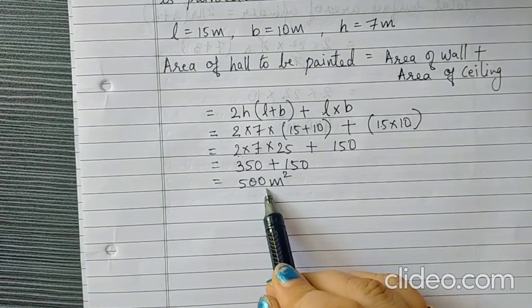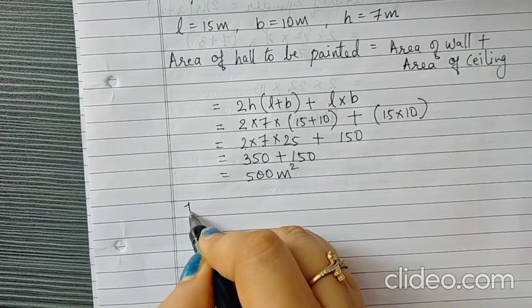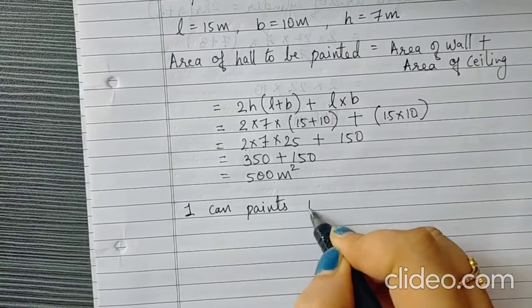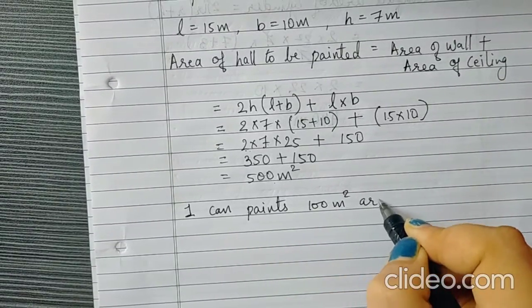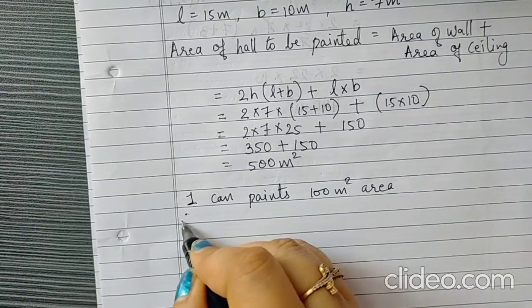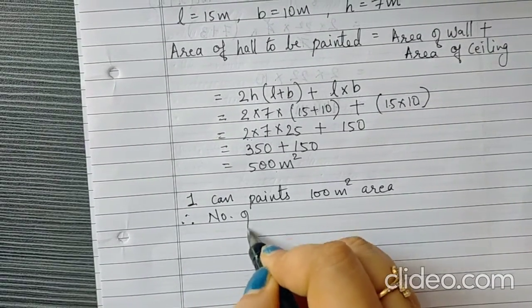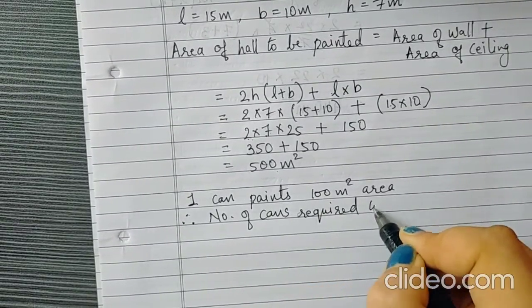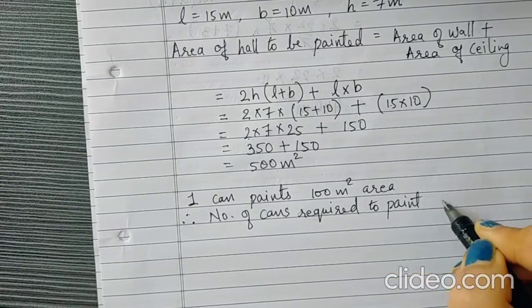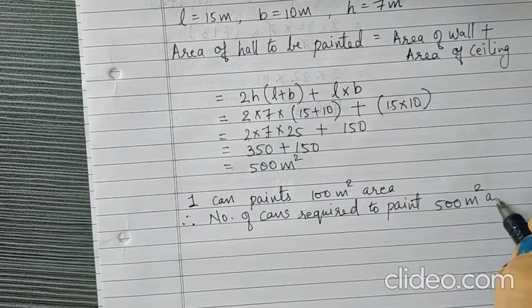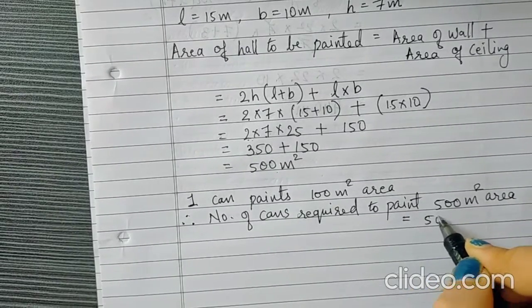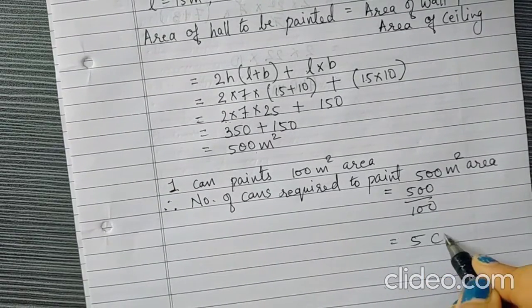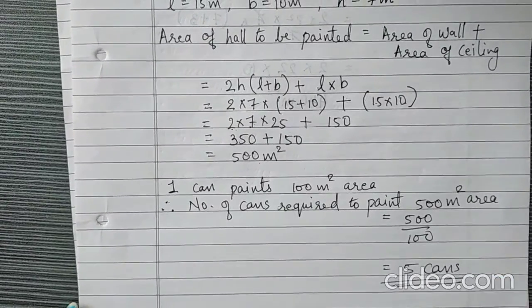Now, for every 100 meter square we need 1 can. 1 can paints 100 meter square area. Therefore, number of cans required to paint 500 meter square area will be equal to 500 upon 100. And that is 5 cans. So, we required 5 cans to paint this hall.